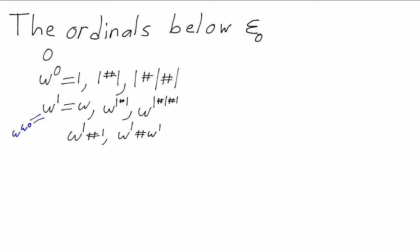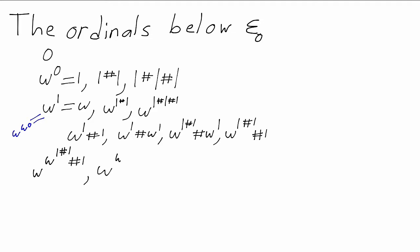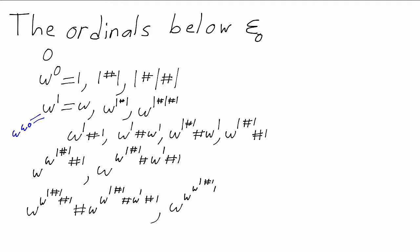We have omega to the one plus one, omega to the one plus omega to the one, omega to the one plus one plus omega to the one, omega to the one plus one plus one, and so on. And then, since we have all these ordinals, we can put them in exponents and get more ordinals: omega to the omega to the one plus one plus one, and omega to the omega to the one plus one plus omega to the one plus one. Then we can add these and apply exponents again, and so on.